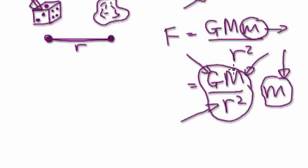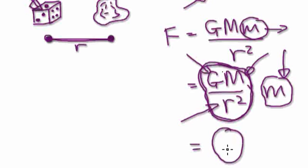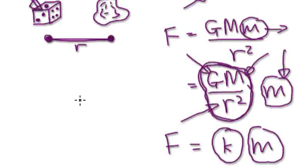So really, this whole thing here is just a number, it's just a number that doesn't change. And in our case, it's a number that we don't really care about. So let's just call it K for the time being. So it boils down to K times M, so the force is equal to K times M.